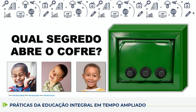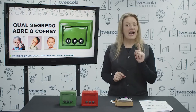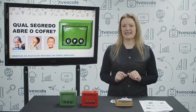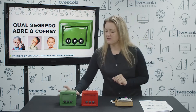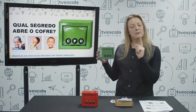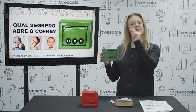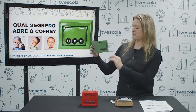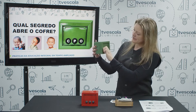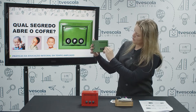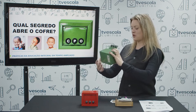Então, o segredo que abre o cofre é C, P e O. Agora que sabemos qual é a sequência de letras que abre o cofre verde, vamos colocar as informações para descobrir quais são os três tesouros que estão dentro deste cofre. A primeira letra: C, P, O. Abrimos o nosso cofre!